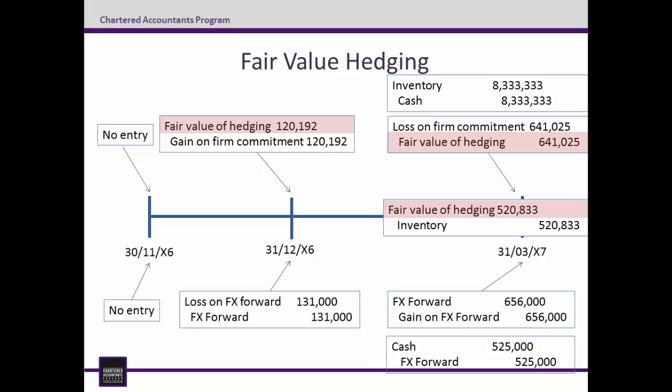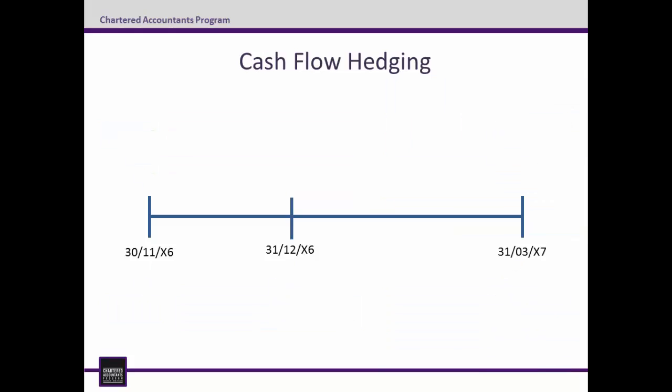We'll now turn our attention to cash flow hedging. Looking at entries as at the 30th of November 2006, this works just the same as for fair value hedging — there's nothing to do here and for the same reason. Moving now to the 31st of December 2006, the first thing to do is to find the fair value of the hedging instrument, the FX forward. And this we have: it's negative $131,000.